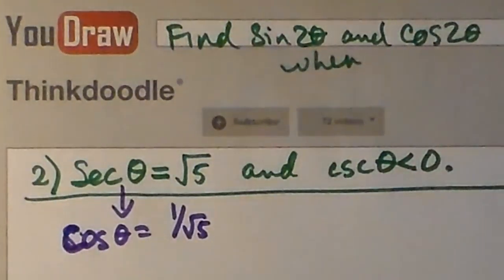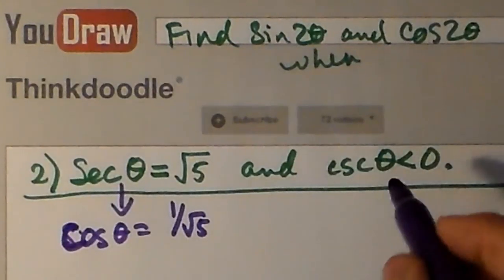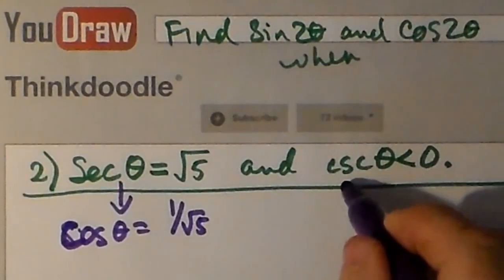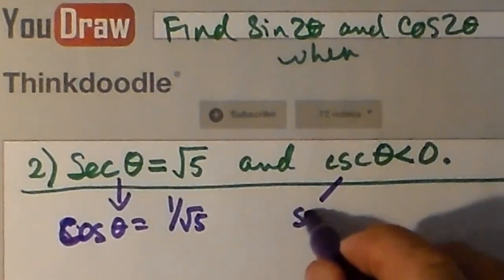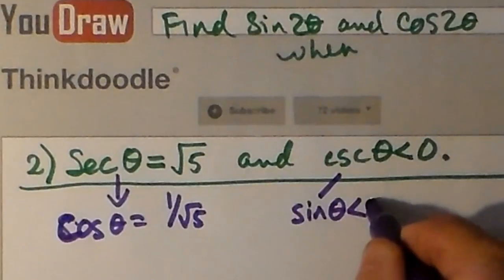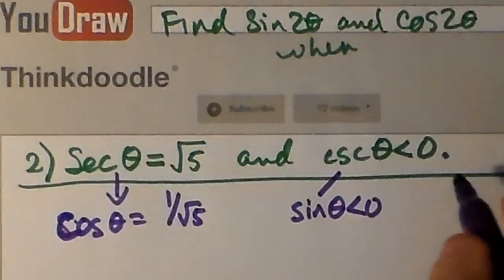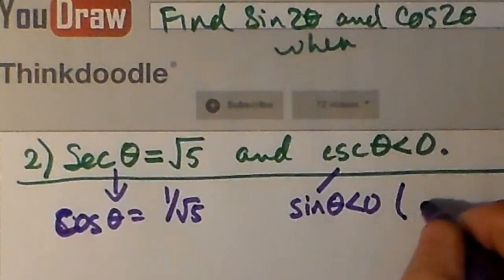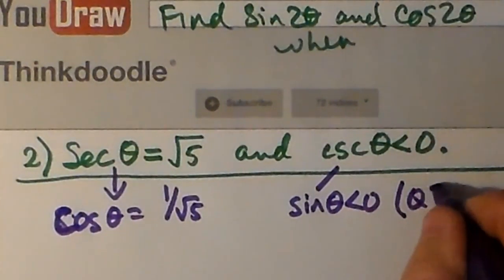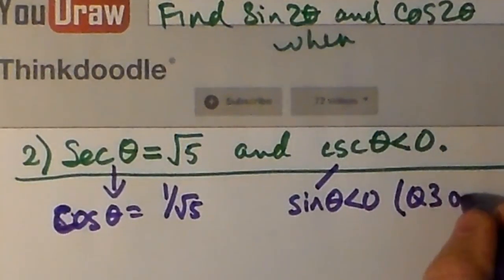Secant θ is 1 over cosθ, so if secant θ is √5, then cosθ must be 1/√5, or equivalently √5/5.